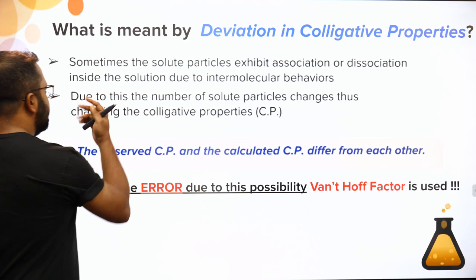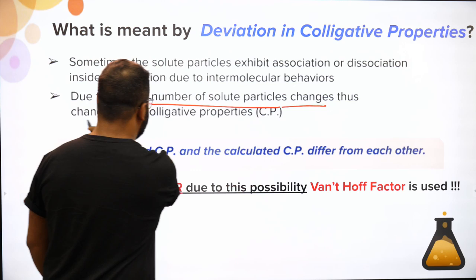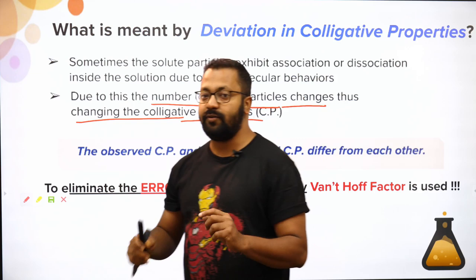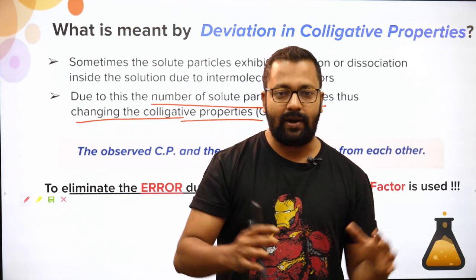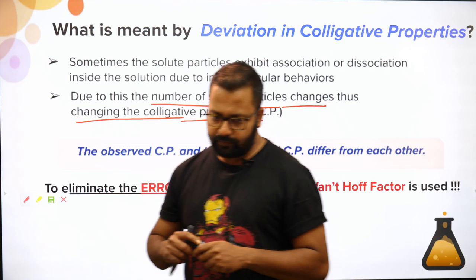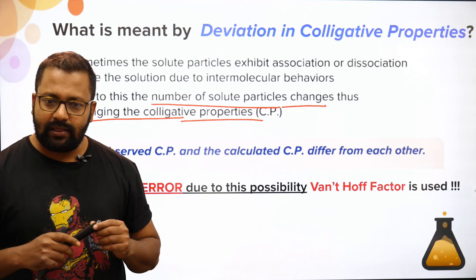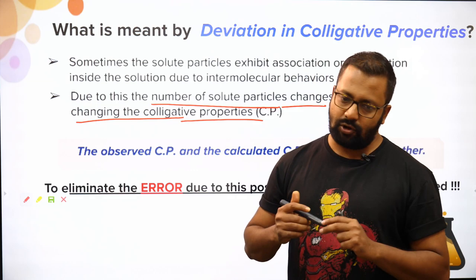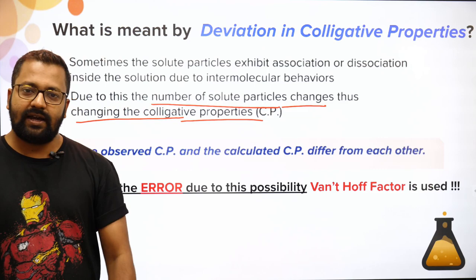Sometimes solute particles exhibit association and dissociation, and due to this the number of solute particles changes, which changes the colligative properties. You assume one mole is dissolved, but what is actually present may be two moles if the substance dissociates. If association takes place instead, the extent of association will alter the colligative properties. 11th class sessions run Tuesday, Thursday, and Saturday; 12th standard sessions on Monday, Wednesday, and Friday. We'll discuss azeotropic mixtures in the next class.